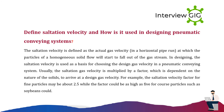Define saltation velocity and how it is used in designing pneumatic conveying systems. The saltation velocity is defined as the actual gas velocity in a horizontal pipe run at which particles of a homogeneous solid flow will start to fall out of the gas stream. In designing, the saltation velocity is used as a basis for choosing the design gas velocity. The saltation velocity is multiplied by a factor dependent on the nature of the solids — for example, the factor for fine particles may be about 2.5, while it could be as high as 5 for coarse particles such as soybeans.